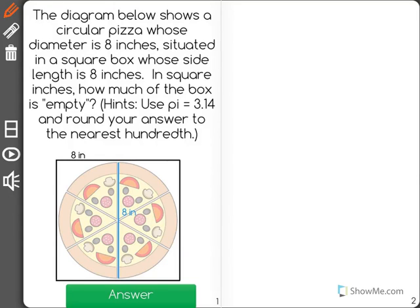The diagram below shows a circular pizza whose diameter is 8 inches, situated in a square box whose side length is 8 inches. In square inches, how much of the box is empty? Hints: use pi equals 3.14 and round your answer to the nearest hundredth.